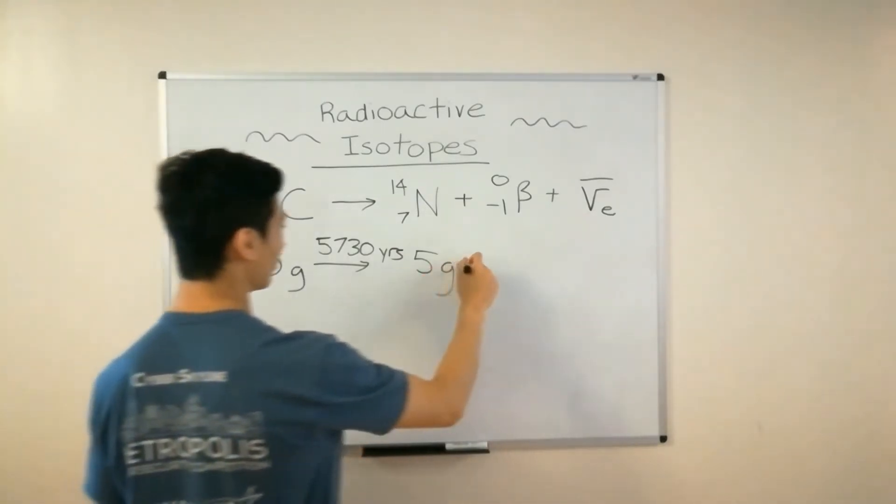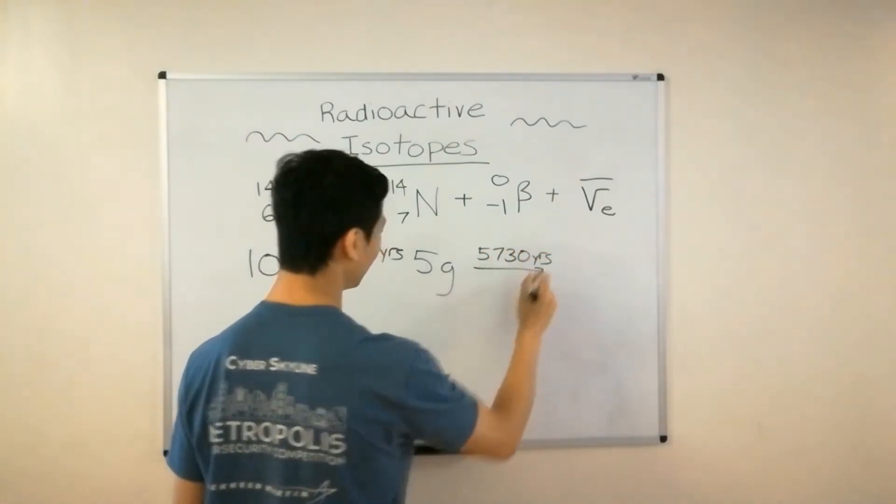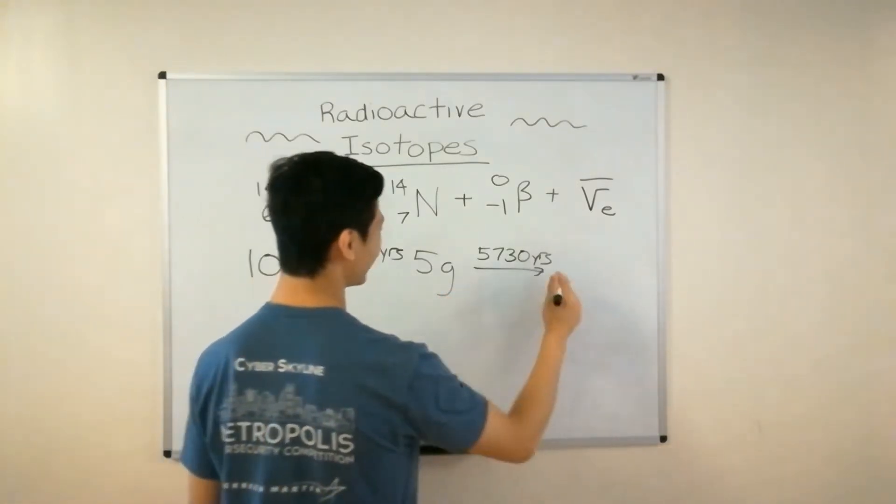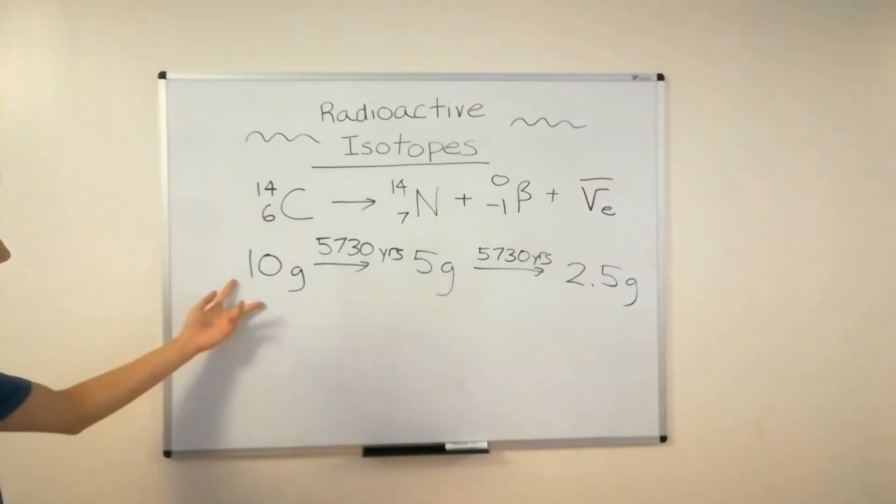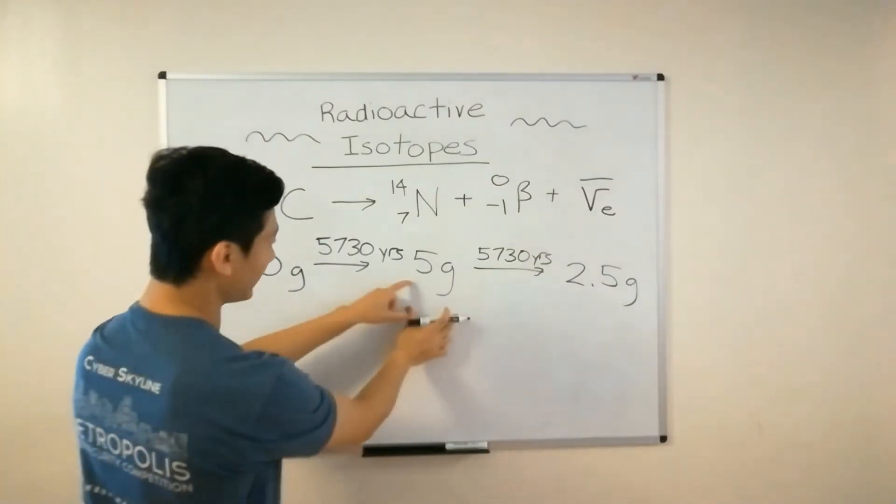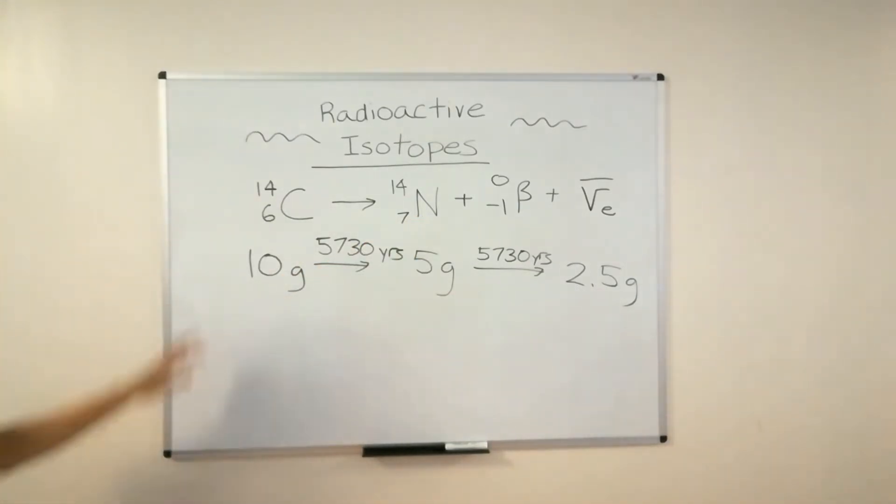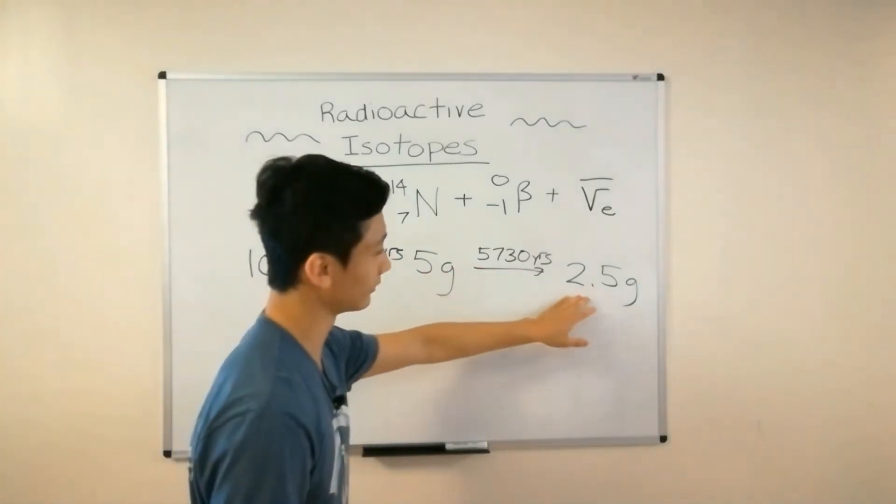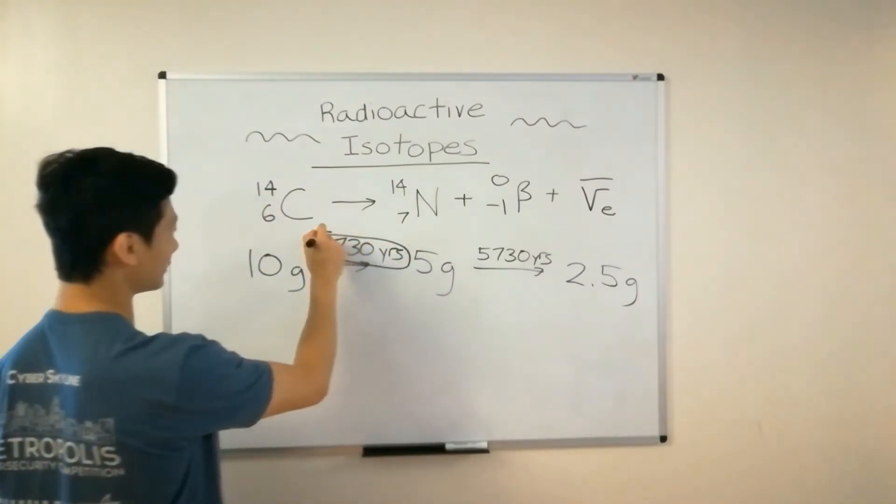You do the same thing, you wait another 5,730 years, you're a patient immortal being, and then you realize that you only have 2.5 grams left. What is happening here is you can see that this carbon is decaying because it's losing mass in the form of nitrogen gas that's releasing it off. So we see that it always decreases by one half, which is why we call this number 5,730 years.